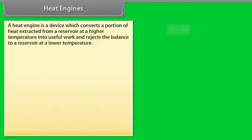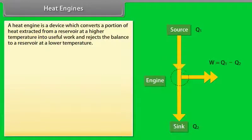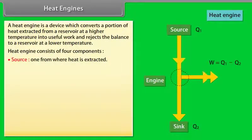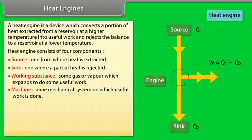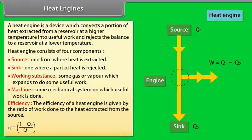Heat engines. A heat engine is a device which converts a portion of heat extracted from a reservoir at high temperature into useful work and rejects the balance to a reservoir at lower temperature. A heat engine consists of four components: a source from where heat is extracted, a sink where part of heat is rejected, a working substance (gas or vapor) that expands to do useful work, and a machine on which useful work is done. The efficiency of a heat engine is given by: efficiency = 1 − Q₂/Q₁.